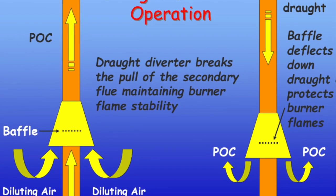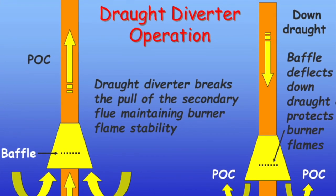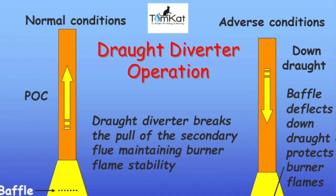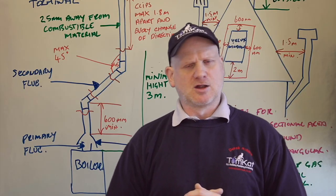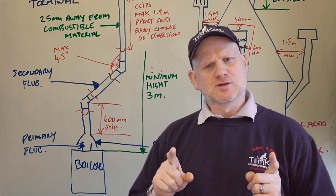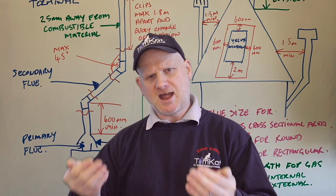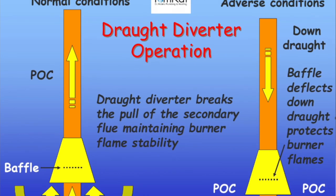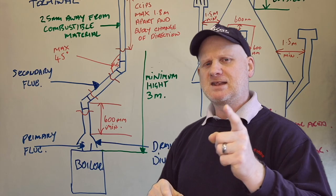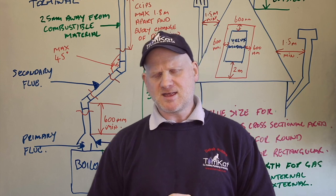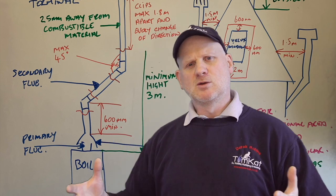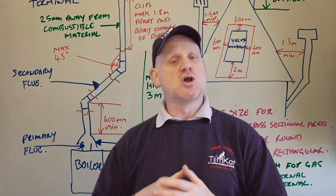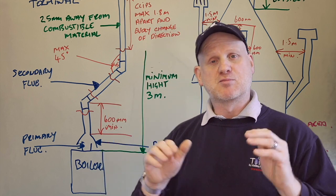First of all, if we get downdraft coming down the flue, it will push the products of combustion away from the burner so it doesn't affect the pilot or the burner. Also, it allows fresh air into the flue system as the boiler is running to dilute the products of combustion. And finally, it stops excessive flue pull — if the flue is pulling too much, it might lift off the burner and lift the pilot light.